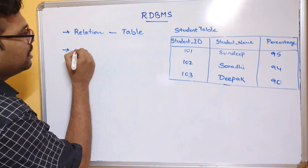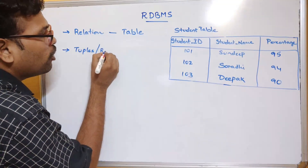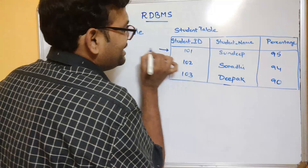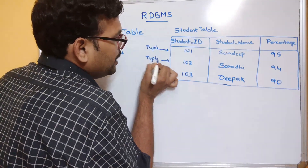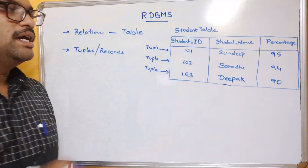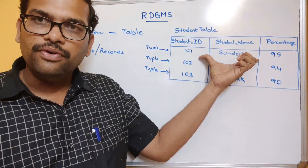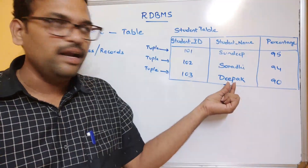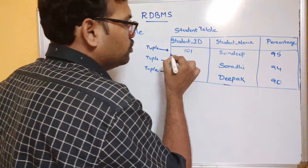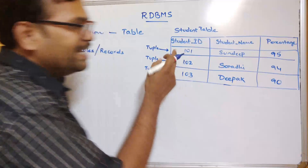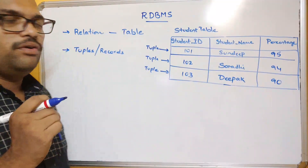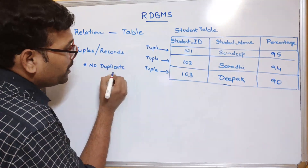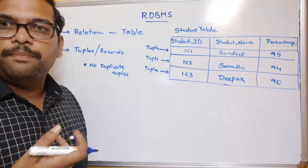The second terminology is tuples or records. The individual row is known as a tuple. For example, the first row contains details of student Sandeep, the second row contains details of Saradi, and the third row contains details of Dipak. Each row is known as a tuple or a record. One important rule: there should be no duplicate tuples — identical tuples should not be included in the relation.